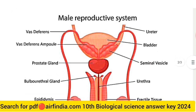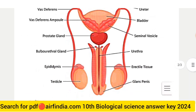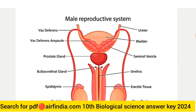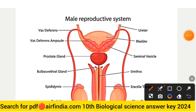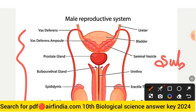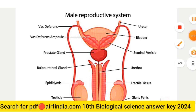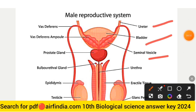Question 12 answer: A labeled diagram of the male reproductive system. You have to draw this in your notebooks and practice these question papers. The diagram includes: ureter, bladder, seminal vesicle, urethra, prostate gland, and vas deferens.